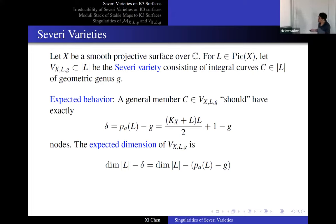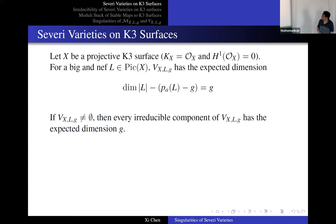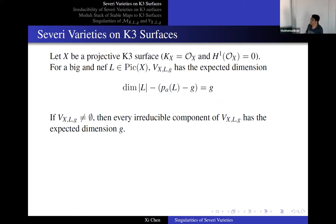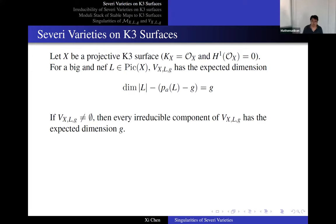Now the most interesting thing: switch over to the K3 surface. Look at the Severi variety on the K3 surface — you fix a line bundle and look at the curves with a fixed genus in this line bundle. For a K3 surface — a surface with a trivial canonical bundle and H^1(O_X) = 0 — if you fix a big nef line bundle on X and look at the dimension of the linear system, it's actually exactly given by the arithmetic genus p_a(L). So if you look at the expected dimension, it works out to equal exactly g, because the dimension of the linear system is exactly the arithmetic genus.